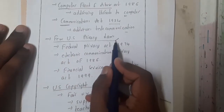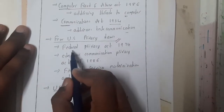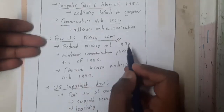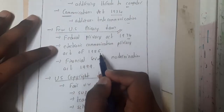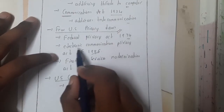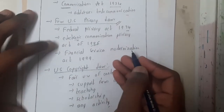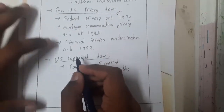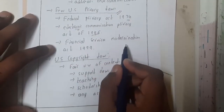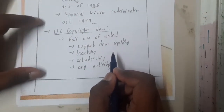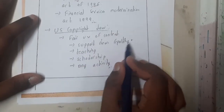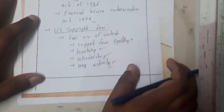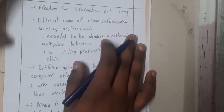Some U.S. privacy laws include the Privacy Act of 1974, and the Electronic Communication Privacy Act of 1986, which ensures that electronic communications remain private. The Financial Services Modernization Act of 1999 is also included. Regarding U.S. copyright, it covers fair use of content supporting news reports, teaching, scholarship, and other activities.